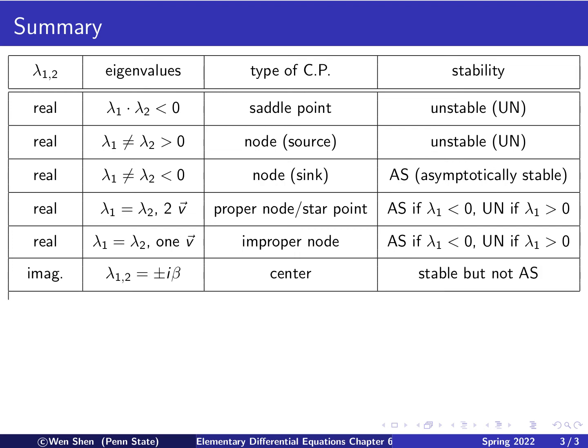The next one is pure imaginary eigenvalues, then the eigenvalues can be written as ±iβ, the imaginary part. And the type of the critical point is a center, and a center is stable, but not asymptotically stable.